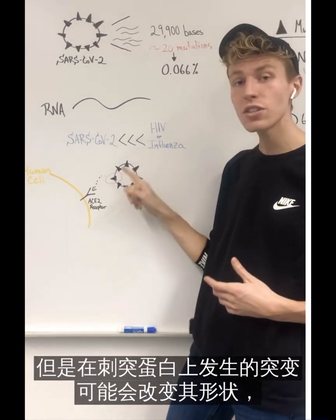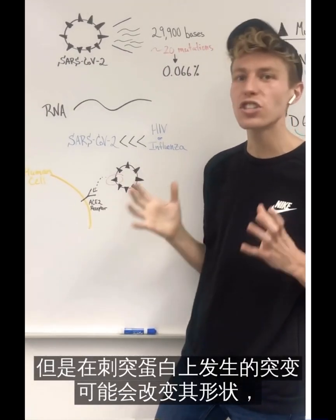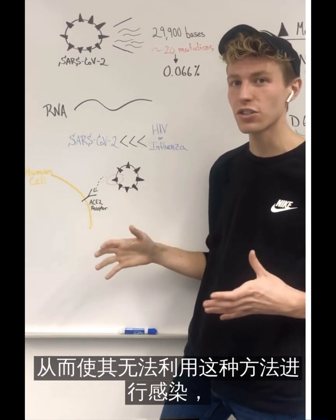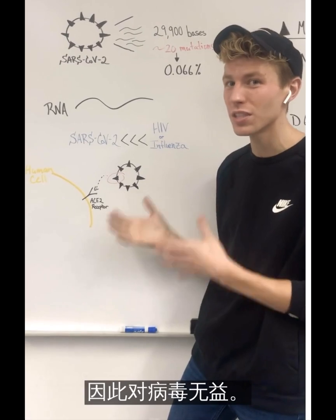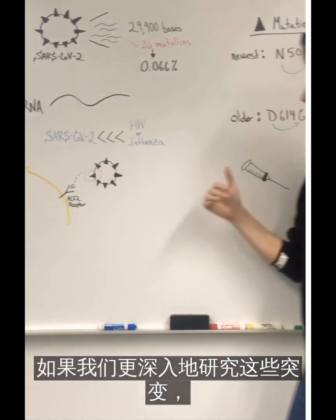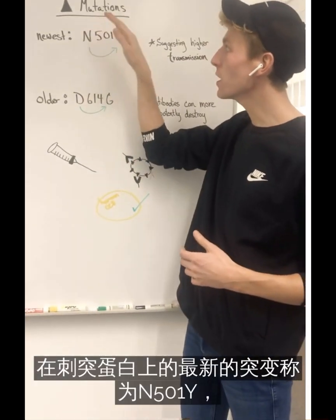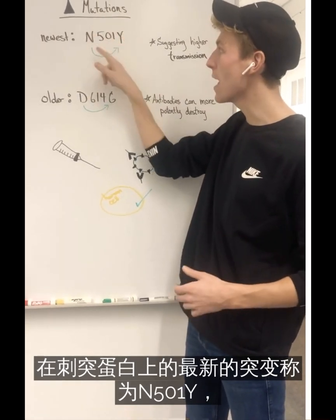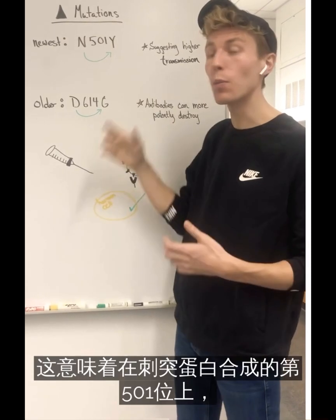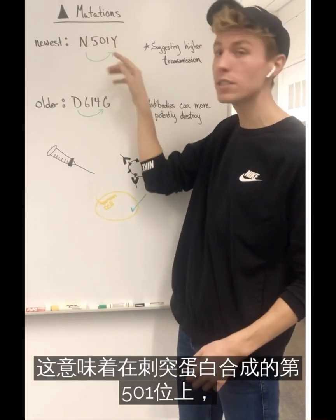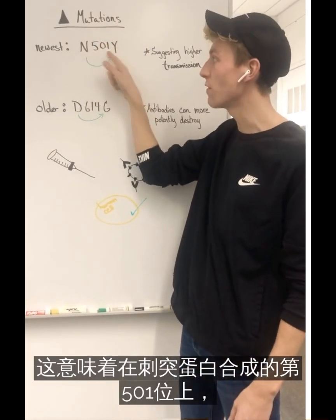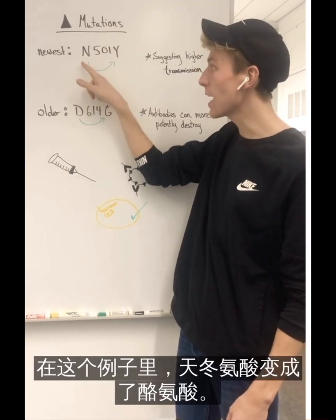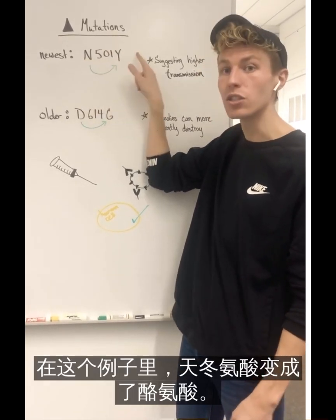However, mutations on the spike protein could change its shape, thus not allowing it to use this mechanism for infection, and thus not being beneficial to the virus. But if we look at these mutations in a bit more depth, specific mutations on the spike protein of the newest type are known as N501Y. What this means is, on the instructions to make the spike protein at position 501, one amino acid has been changed to another — in this case, a spare gene has been changed to tyrosine.